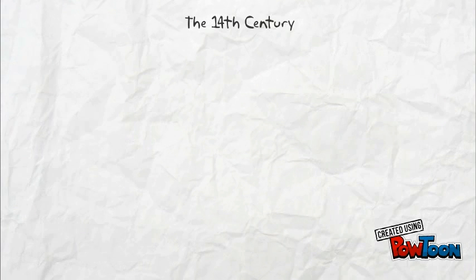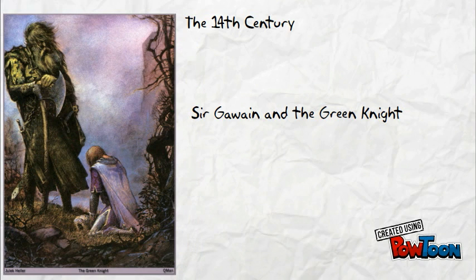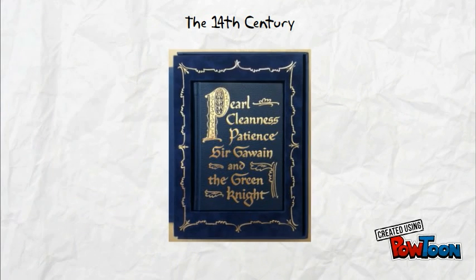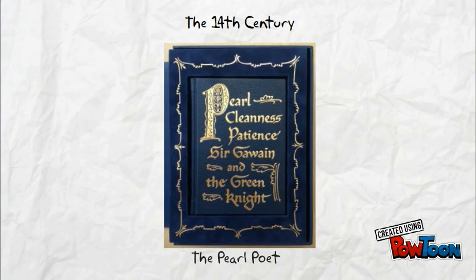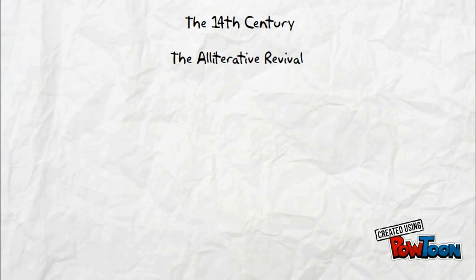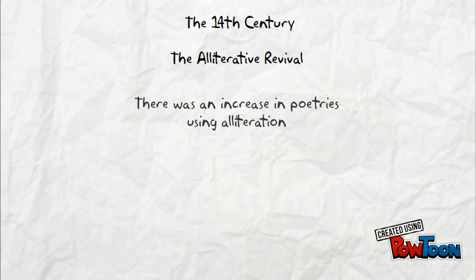Moving on to the 14th century — following the romance genre trend, this was the period for the emergence of a classic tale, Sir Gawain and the Green Knight. Sir Gawain and the Green Knight is one of the examples of a poem using alliteration, the repeated sounds of consonants in a series of words. Although the author has never been truly known, it is often inferred that the author was the same author of the poems titled The Pearl, Cleanness, and Patience — poems whose author is also anonymous. These poems were part of what is called the Alliterative Revival, in which there was a resurgence of poetry utilizing alliterations.